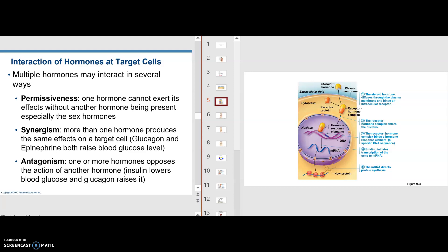Another method is synergism. More than one hormone produces the same effect on the target cell. For example, glucagon and epinephrine both raise blood glucose level.